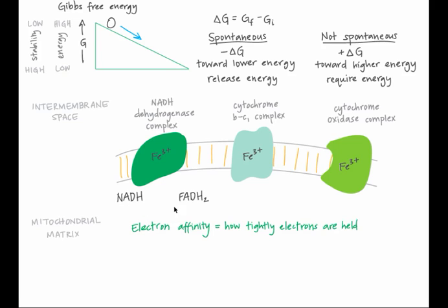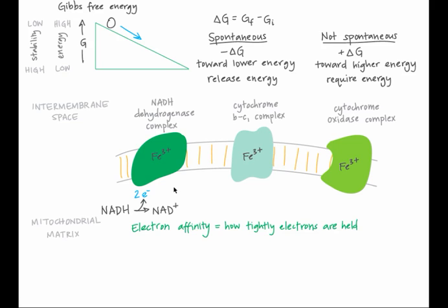Affinity is a measure of how tightly something is held. NADH and FADH2 don't hold electrons particularly tightly. NADH passes its electrons to NADH dehydrogenase complex, a large membrane-bound protein on the inner mitochondrial membrane. The iron 3+ ions in NADH dehydrogenase complex have a higher electron affinity than does NADH.